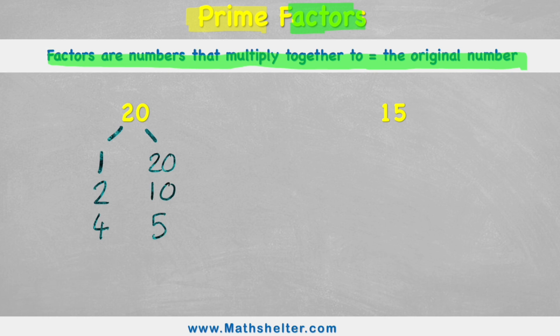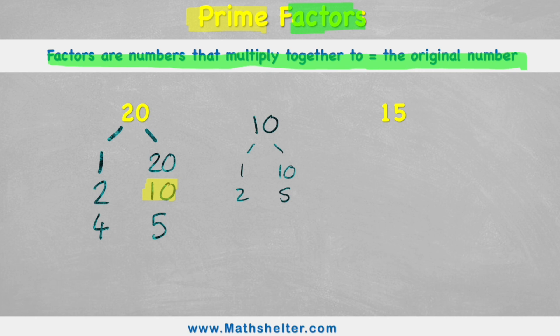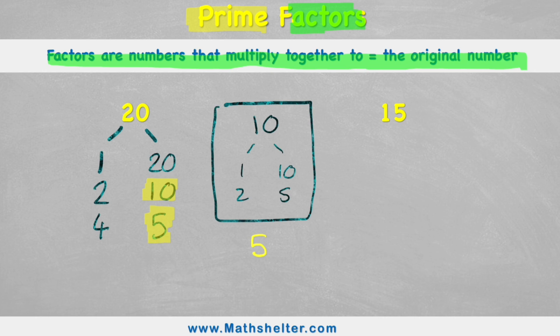Now I've got my factors of 20, what I'm looking for are the prime factors. But what's a prime number? Let's take the number 10. If I had 10 and tried to find the factors of 10, I would have 1 and 10, and 2 and 5. So because 10 has a range of different factors, this is not a prime number. Let's compare that to the number 5. When I do the number 5, I can see that 5 can be made up of 1 times 5, but then I have no other factors.